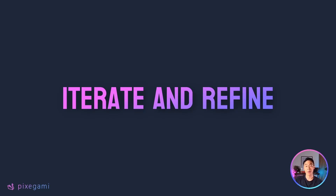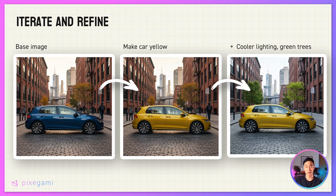The third technique is about using conversational refinement — you iterate and refine on your images, and you don't have to get the perfect image on the first try. You could start with a basic scene, like a picture of a car in the city, and then ask for specific changes: make the car bright yellow, then update the scene to have cooler brighter daylight and make the trees more green. Each iteration builds on the previous one — first you get the basic composition, then you adjust the car color, then you fine-tune the lighting and the environment. This lets you dial in exactly what you want without having to start over from scratch each time.